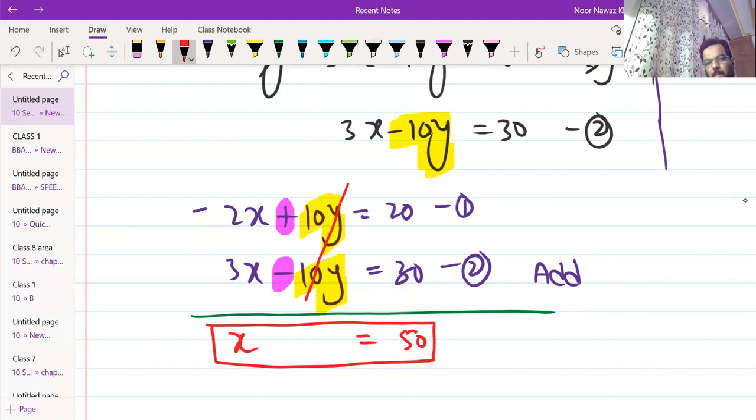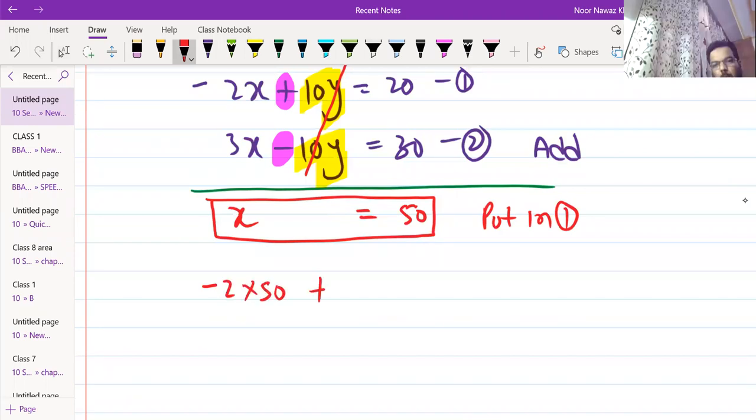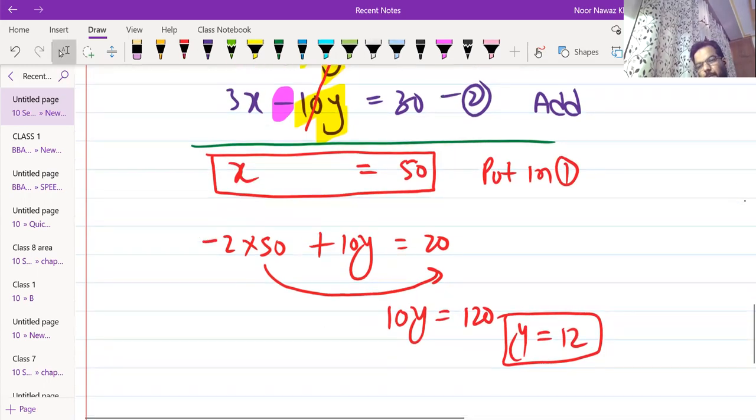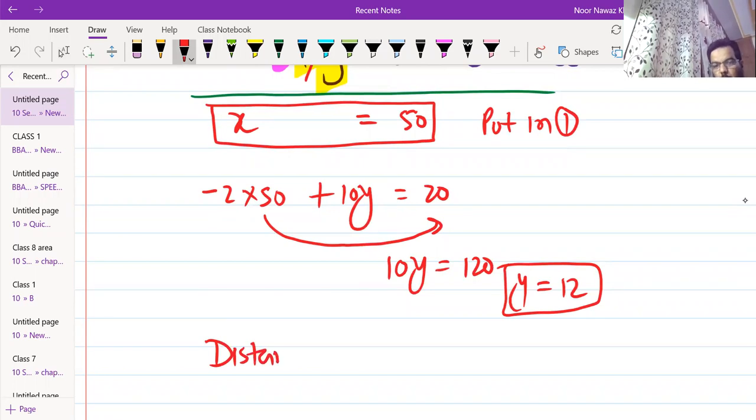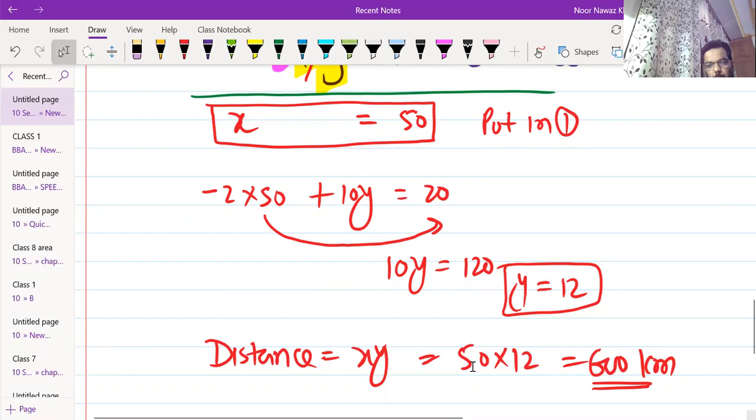When you have x equals 50, you can put in 1 or 2. If we put in 1, then minus 2 into 50 plus 10y is equal to 20. So you have x equals 50 and y is equal to 12. But you have to find distance, and distance is equal to speed into time. So 50 times 12 is 600. Let me tell you, do you have a little understanding?